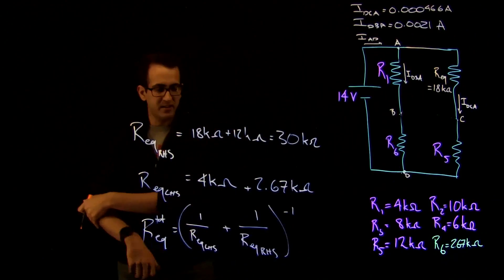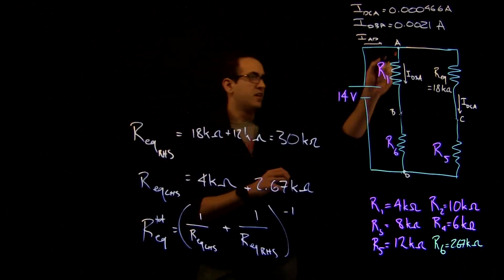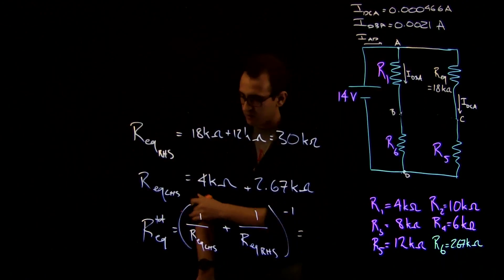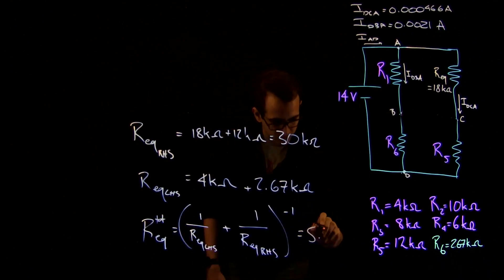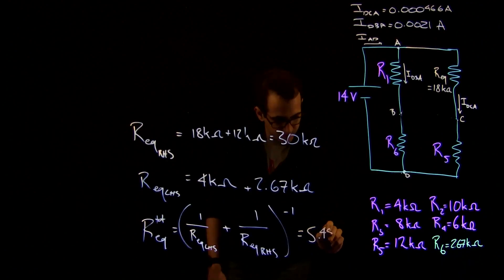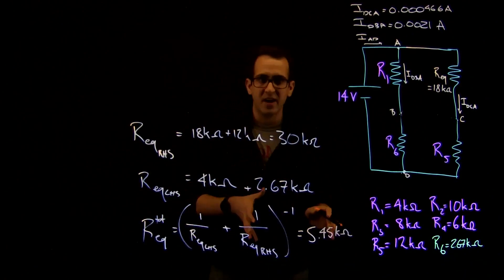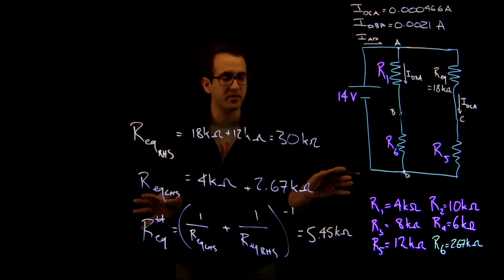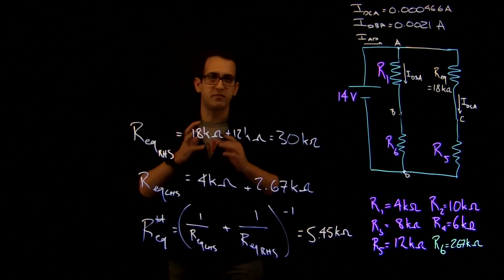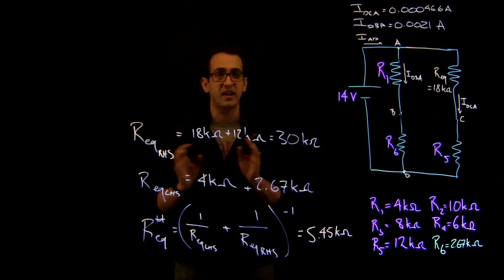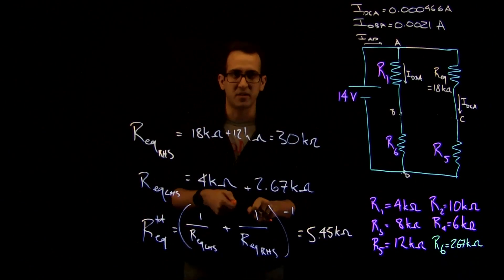So if we go ahead and substitute all the numbers in, what we find is that the total equivalent resistance of this entire Wheatstone bridge is going to be equal to 5.45 kilohms. Now we have the equivalent resistance of this entire circuit component, and we can go ahead and calculate any other quantity we want to — the current being drawn, the power dissipated, anything we'd like. We've taken that whole mass of complex circuit elements and simplified it down to something really quite simple.